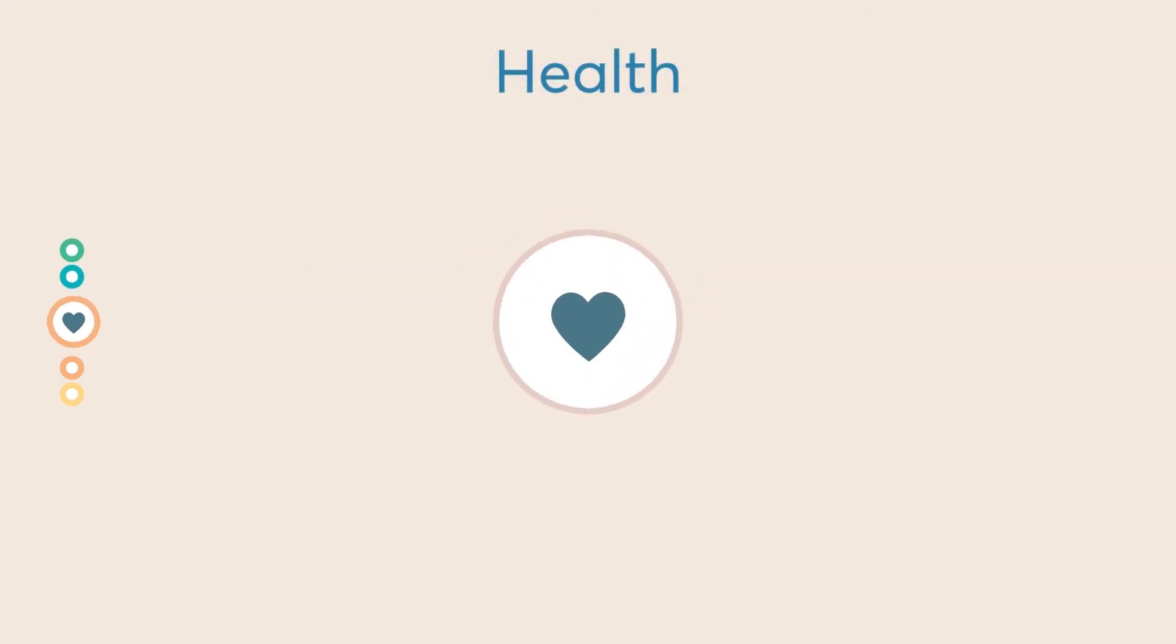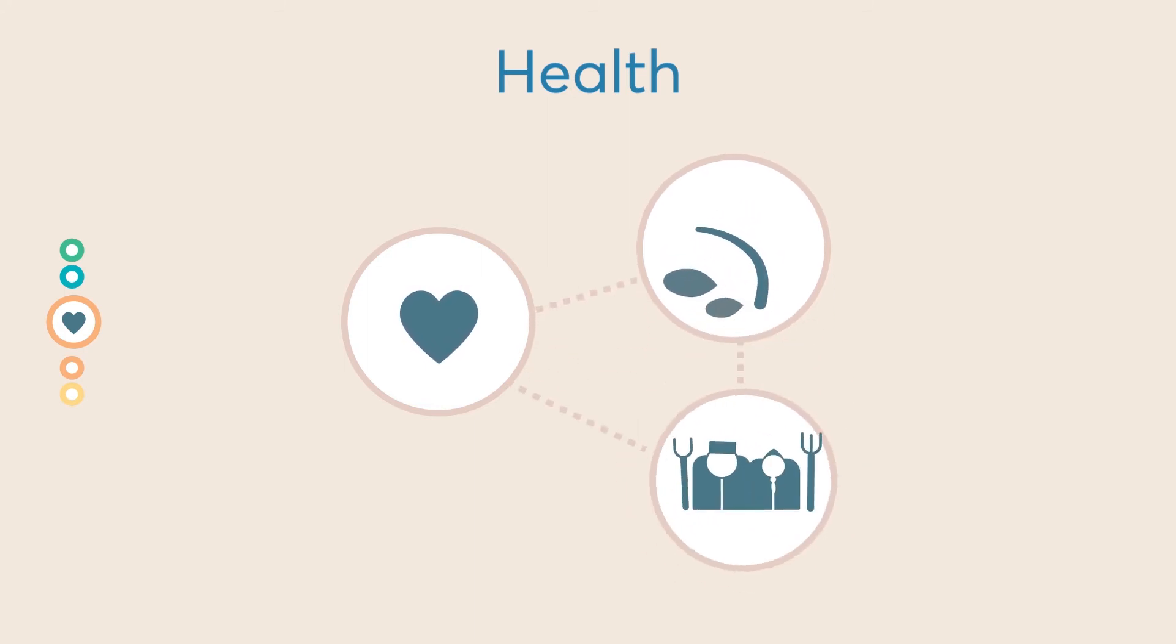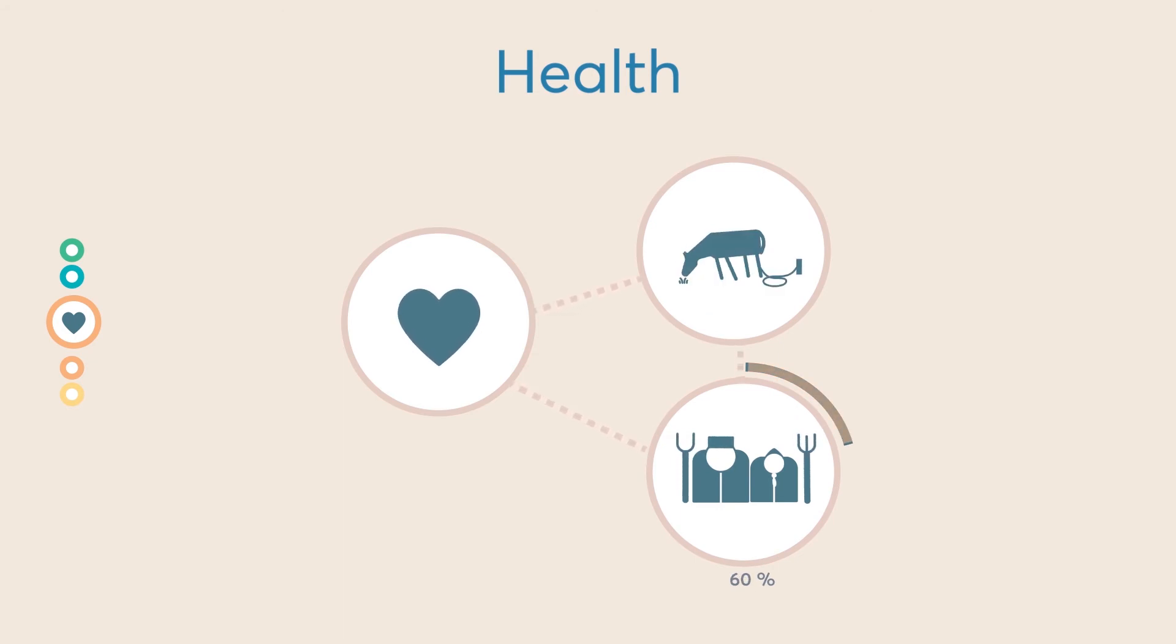Thirdly, health, which is significantly impacted by the agricultural sector where crop failures and decreased food security is taking place. As mentioned earlier, 60% of the Central Asian population lives in rural areas, and thus food security and livelihoods depend extensively upon agricultural productivity.